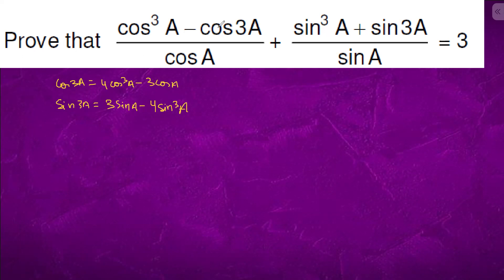If we substitute this here, it will come out to be (cos³A minus 4cos³A plus 3cosA) upon cosA, plus (sin³A plus 3sinA minus 4sin³A) upon sinA. This will come out to be minus 3cos³A divided by cosA, which is 3cos²A plus 3.